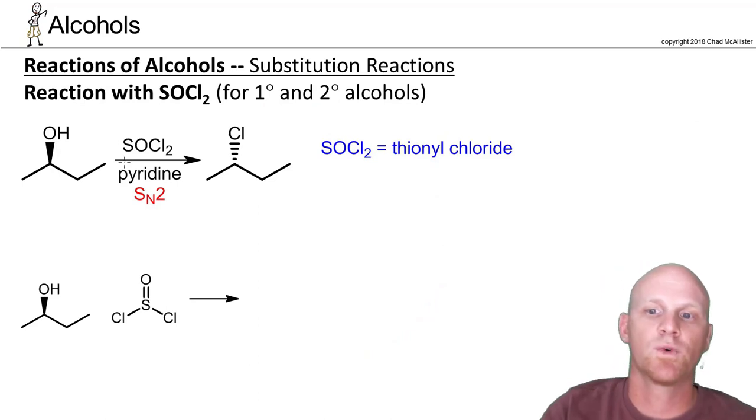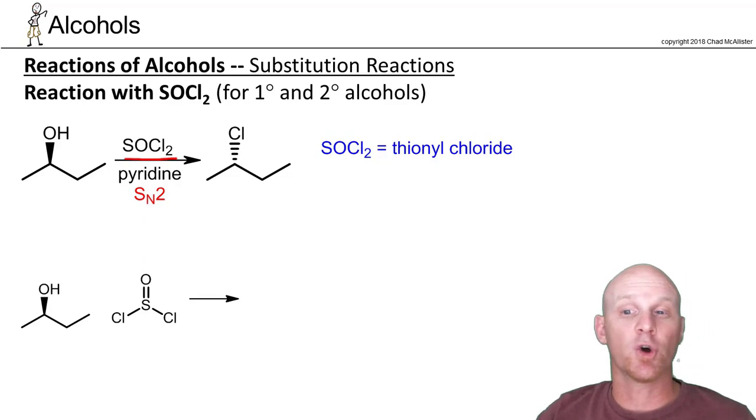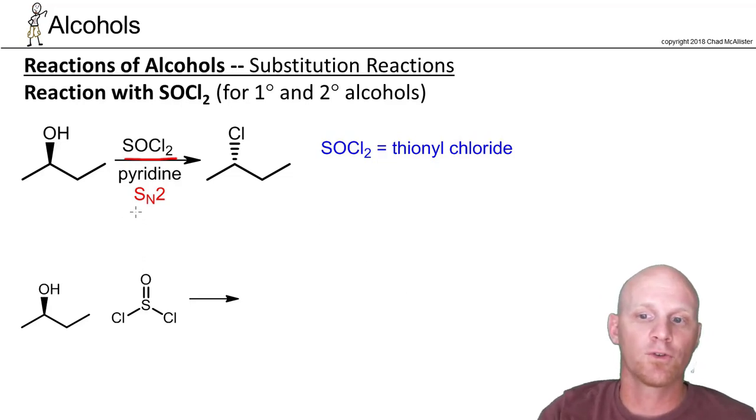All right. So here's the reaction with SOCl2. This is going to do a substitution replacing the OH with a chlorine. It also goes by an SN2 mechanism. And that's why this one also only works for primary and secondary alcohols. You cannot use it with a tertiary alcohol here. But a great alternative to HCl, it only goes SN2. So you're always going to get inversion of configuration if it's happening at a chiral center, as the example I've got here.